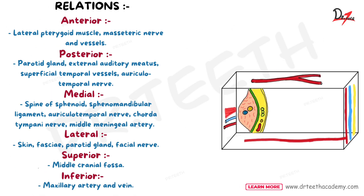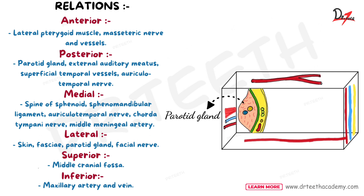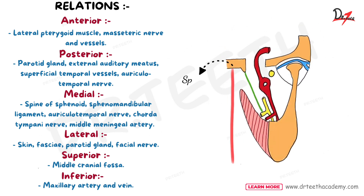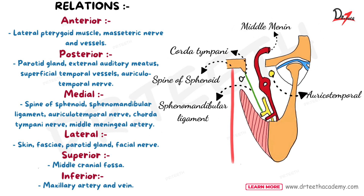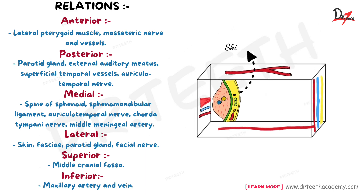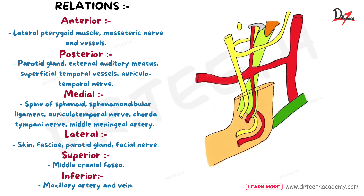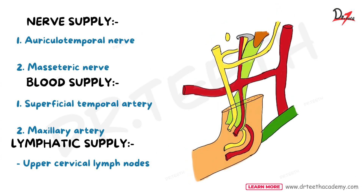Now let's look at the relations of the TMJ. Anteriorly it is related to the lateral pterygoid muscle, masseteric nerve and vessels. Posteriorly we have the parotid gland, external auditory meatus, superficial temporal vessels, and auriculotemporal nerve. Medially there is the spine of sphenoid, sphenomandibular ligament, auriculotemporal nerve, chorda tympani nerve, and middle meningeal artery. Laterally it is related to skin, fascia, parotid gland, and facial nerve. Superiorly the middle cranial fossa is present, and inferiorly the maxillary artery and vein.